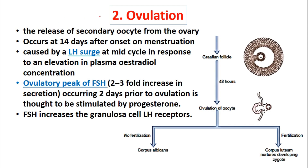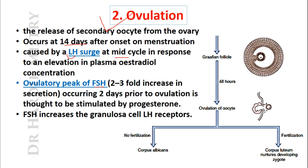The second phase of the ovarian cycle is ovulation — the release of the secondary oocyte from the ovary, occurring 14 days after the onset of menstruation. It is caused by the LH surge, which is a highly increased level of luteinizing hormone occurring in response to elevation in plasma estradiol concentration at mid-cycle, and also due to the ovulatory peak of FSH. There is a 2 to 3-fold increase in FSH secretion occurring 2 days prior to ovulation, thought to be stimulated by progesterone. FSH also increases granulosa cell LH receptors, and ovulation of the ovum occurs approximately 48 hours after the Graafian follicle matures.